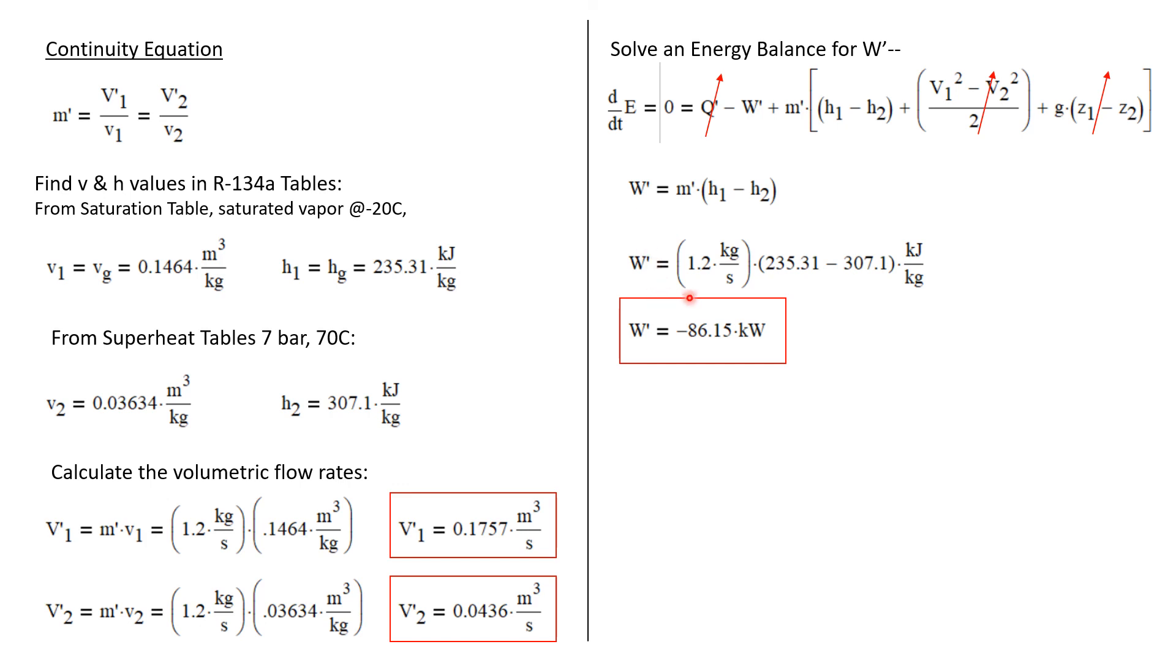So we'll plug in our known value of 1.2 kilograms per second as the mass flow rate. And then we plug in our enthalpy values. And we get W dot, which is the work done by the system. We get minus 86.15 kilowatts.